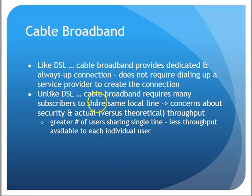With cable broadband, many subscribers share a line in a neighborhood. When my brother first got cable broadband he was one of the first in his neighborhood and speeds were great. Years later, as more houses were built and more people connected, the bandwidth got shared among the neighbors and slowed down. A lot of people didn't realize that's how it worked, but it comes down to the shared infrastructure structure they're using. We'll continue in the next podcast.